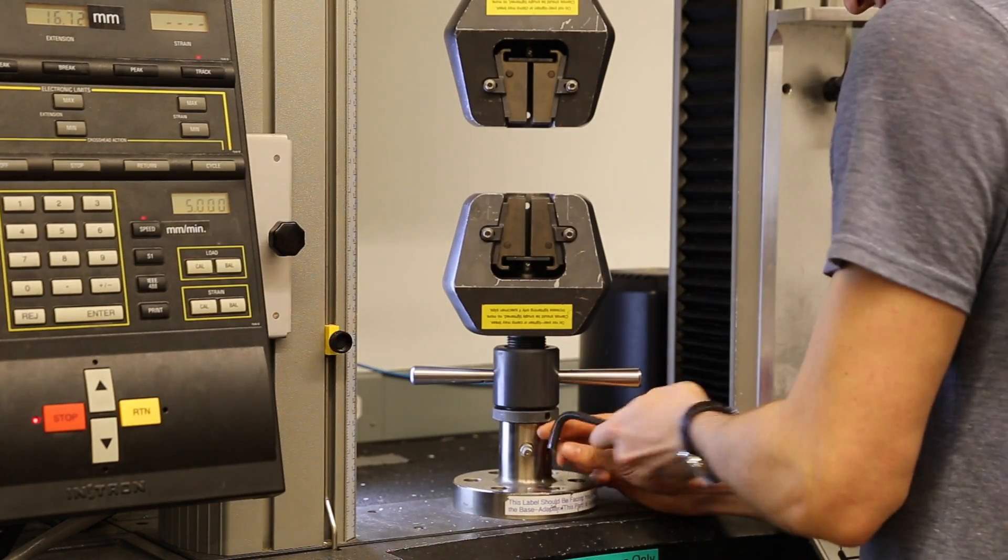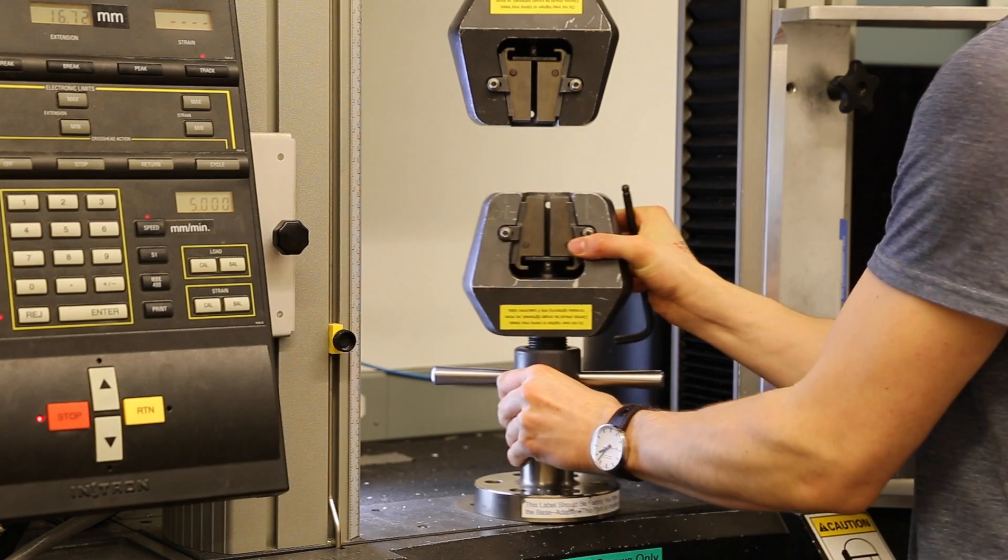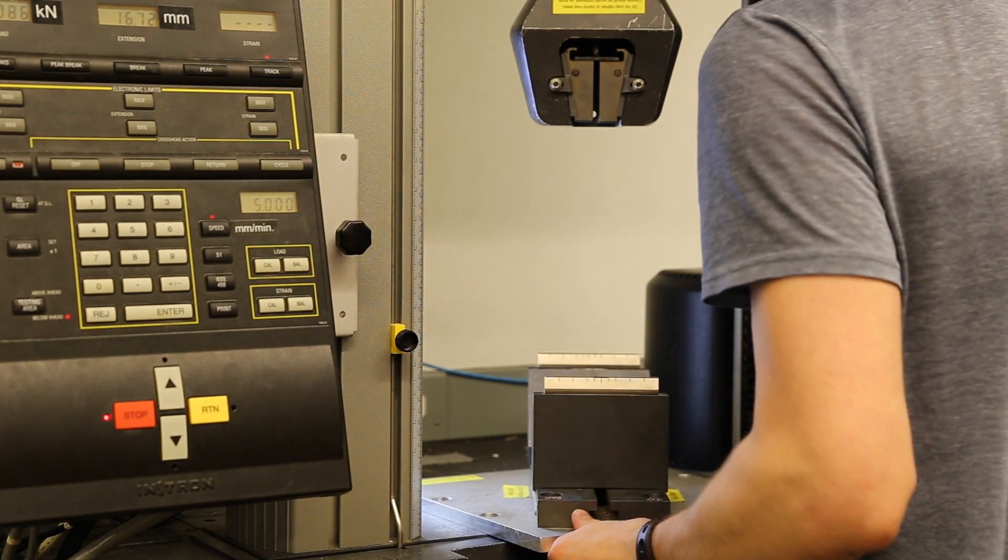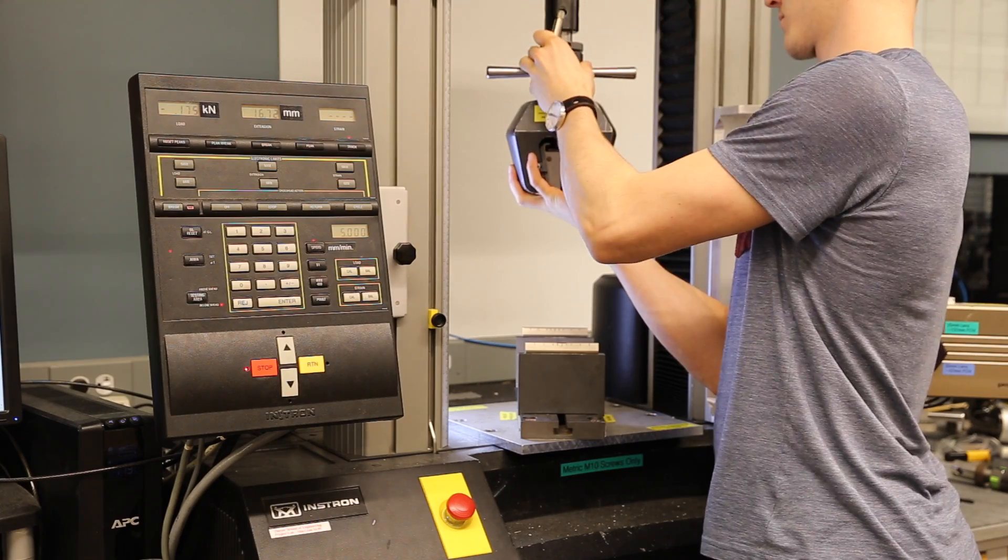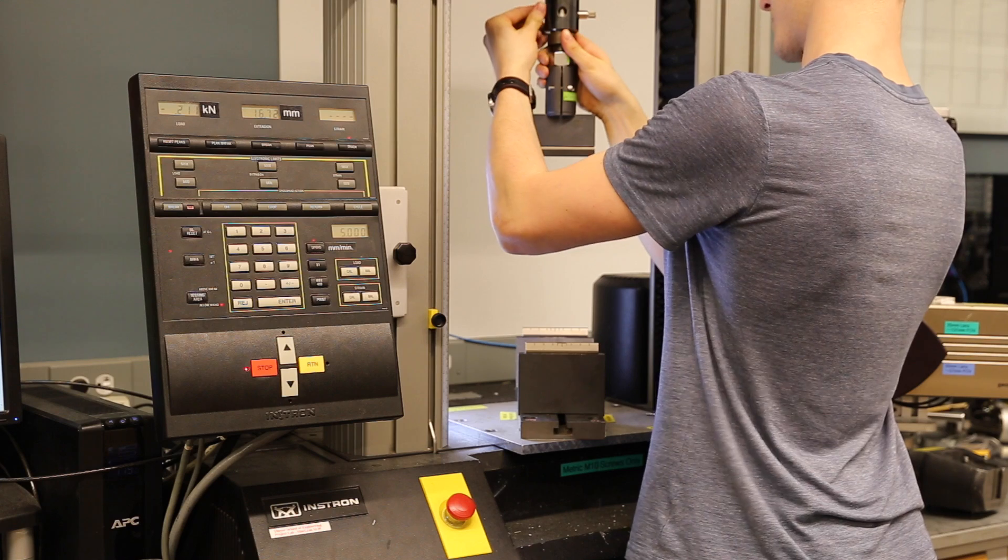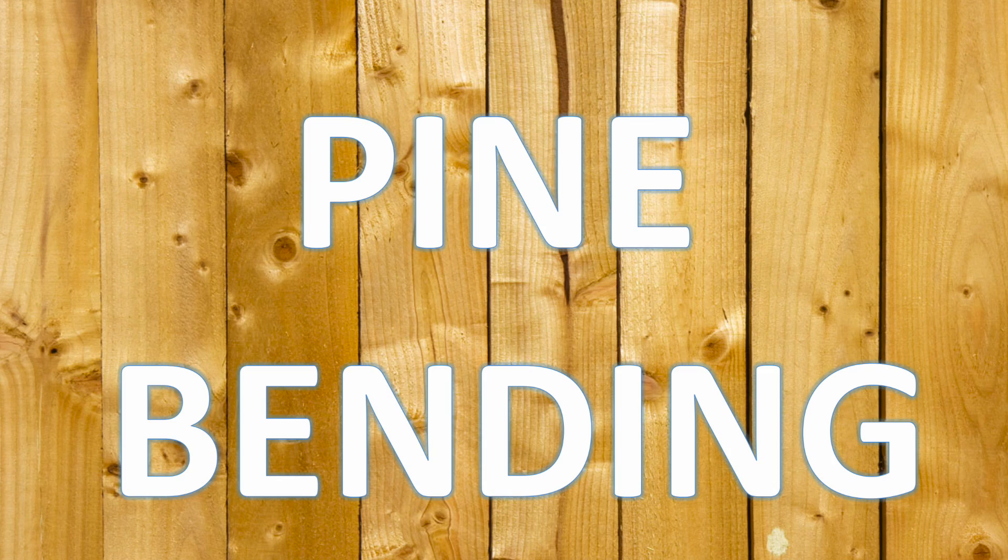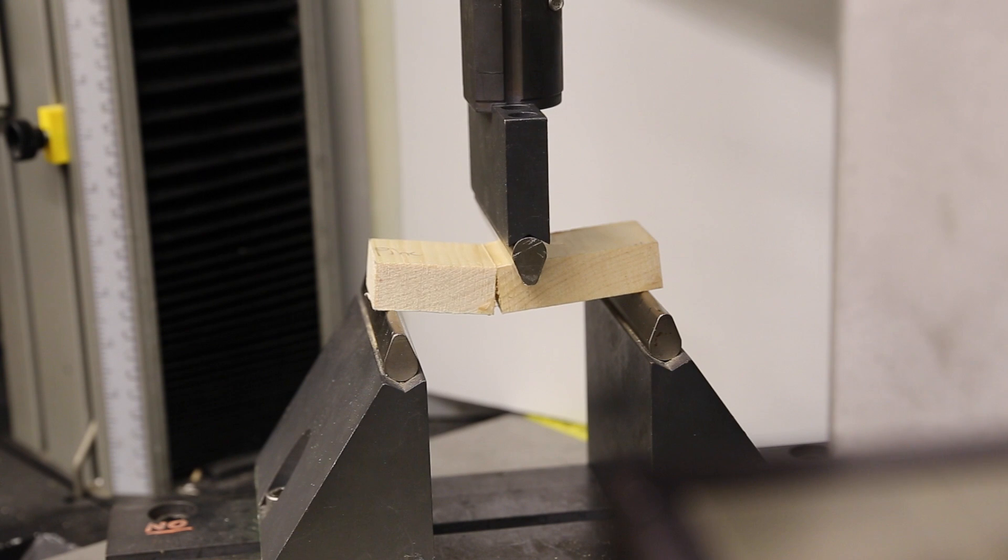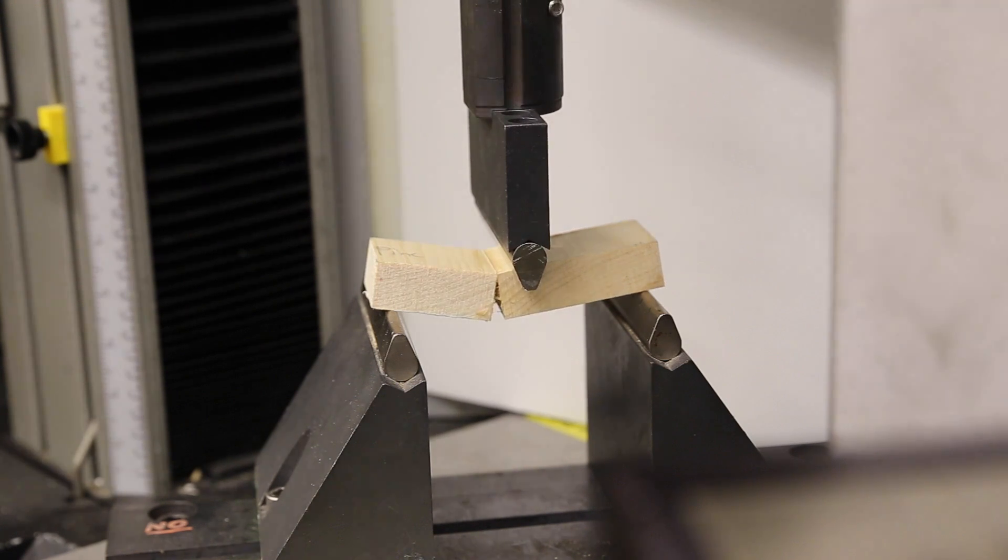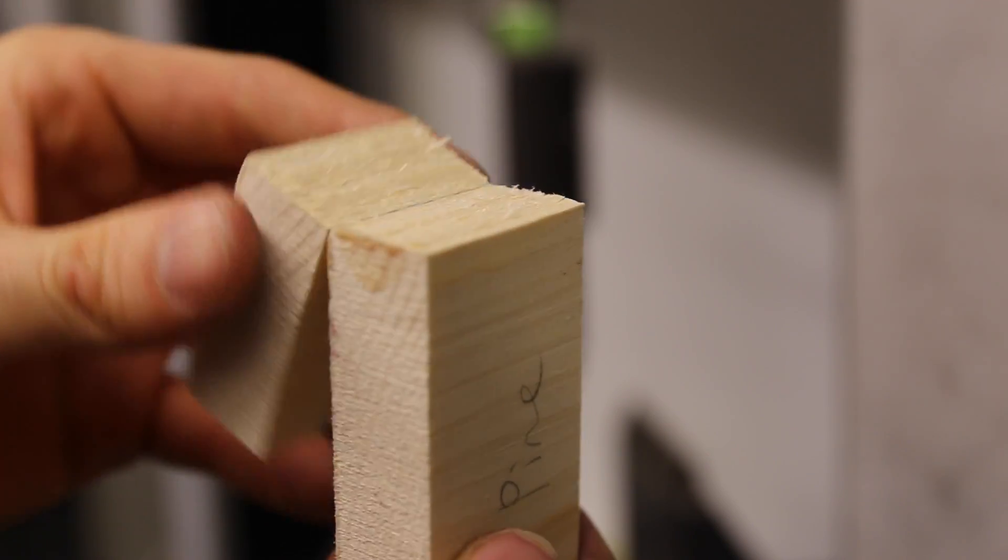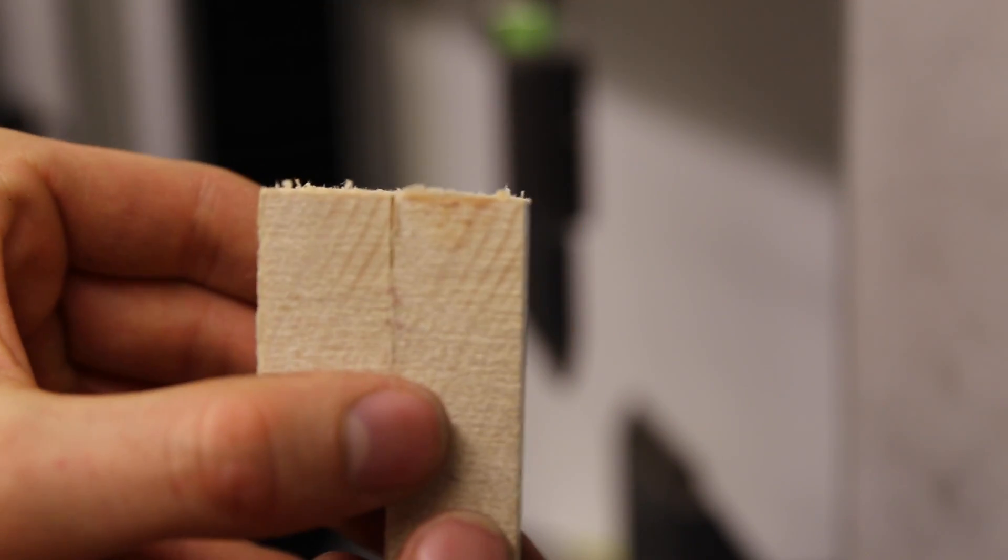Now let's set up the Instron for some bending tests. Let's get started with pine. This one's a little tough to call. It broke along the glue line, but it pulled up the wood quite a bit.